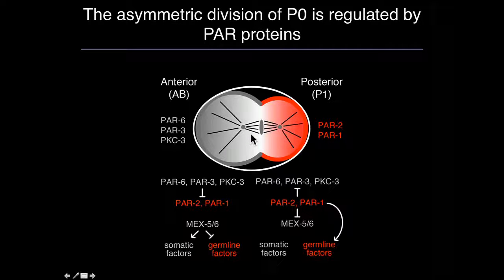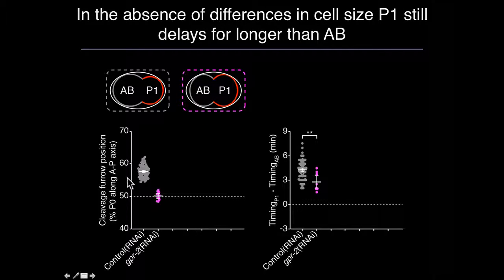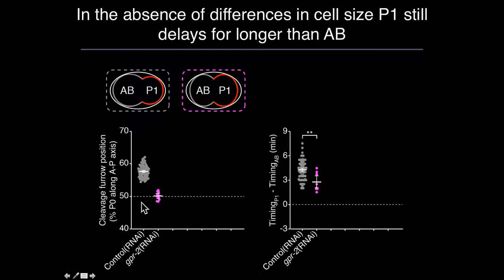The asymmetric distribution of PAR proteins does two things: it generates asymmetry in pulling forces on the mitotic spindle, shifting the spindle posteriorly and generating the size difference between the two cells; and it generates asymmetries in the segregation of cell fate determinants, so that certain factors become enriched in AB and others in P1. We wanted to test how much of the difference in mitotic delay between AB and P1 was due to their size difference. We depleted GPR2, required for asymmetric pulling forces, resulting in AB and P1 being the same size. The difference in delay between the two cells was reduced, but P1 was still delaying significantly longer than AB.